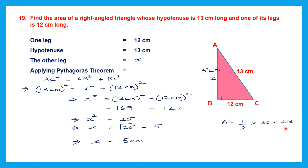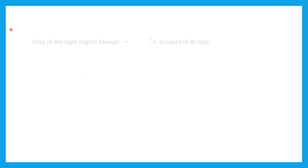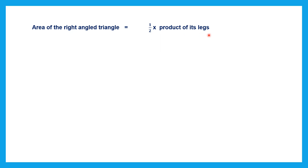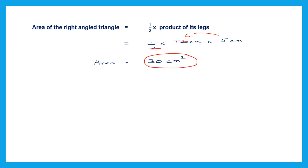Now that we have both legs — AB is 5 centimeters and BC is 12 centimeters — we can find the area. Area of the right-angle triangle equals 1 by 2 into product of its legs: 1 by 2 into 12 into 5. Cancel 2 and 12 to get 6. So area equals 6 into 5 equals 30 centimeter square.